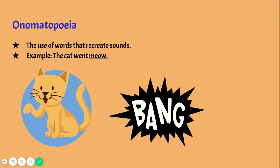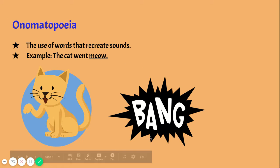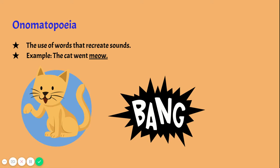We're going to talk about six primary literary devices used by authors. The first one is onomatopoeia, which is the use of words that recreate sounds. For example, 'the cat went meow' — meow is recreating the sound of what a cat makes. In this image right here that says 'bang,' that would also be an onomatopoeia because it is recreating the sound of maybe a glass breaking.